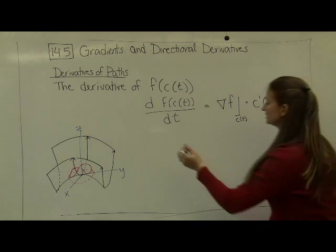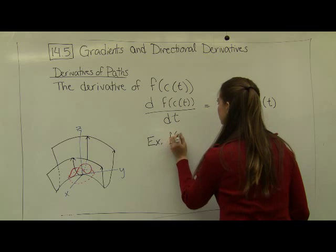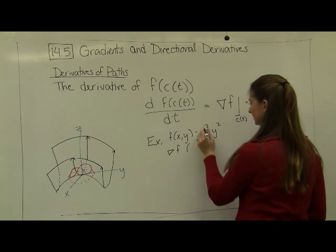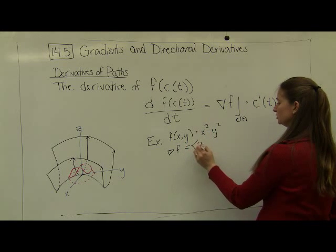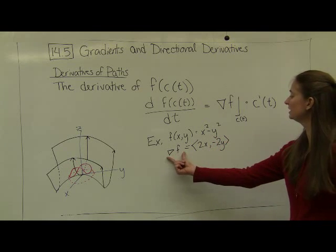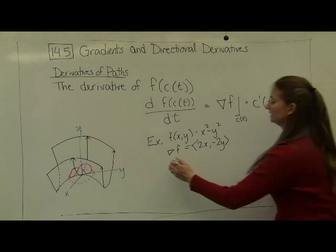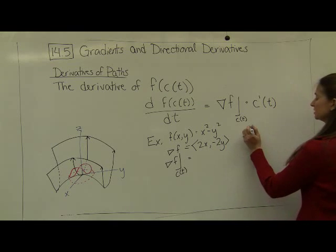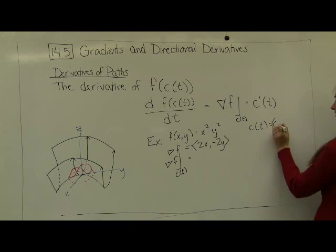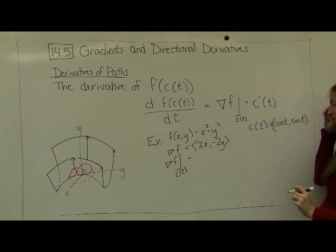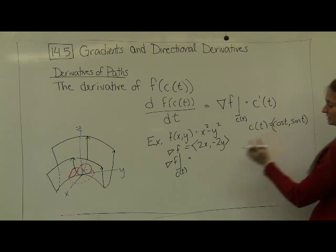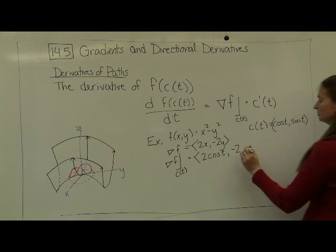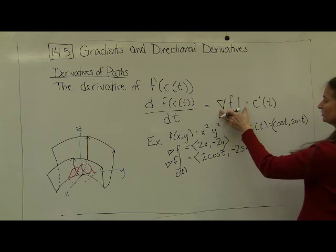So what does this mean for our example? In our example, recall that our f function was given by x squared minus y squared. So that means that the gradient of f is given by the vector 2x, negative 2y. I'm going to have to take this gradient vector and evaluate it at c of t. So the gradient of f evaluated at c of t means that I'm plugging in my c of t function for my x and y components. Recall that my c of t function was given by the cosine of t, comma, sine of t. So in this case, evaluating it where my x value is cosine of t, I get a new vector, 2 times the cosine of t, comma, negative 2 times the y component function, which in this case is sine of t. So that's this first chunk of my derivative.